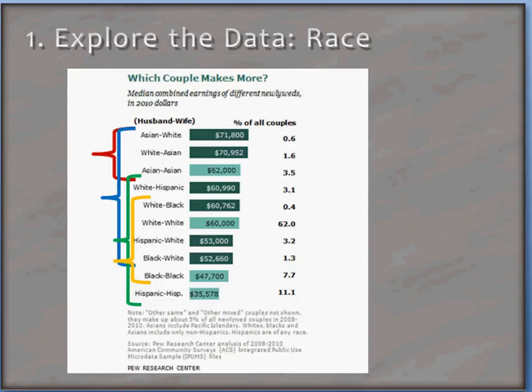From the brackets here, we can get a sense of the general trend in the spread of the data. The red bracket represents marriages involving at least one Asian, and we can see that these landed near the top of the chart. So she's not wrong in saying that Asians do tend to earn more. In comparison, whites had a larger spread — see the blue bracket — and Hispanics and blacks were lower down on the chart. So the general trends she identified are certainly valid.